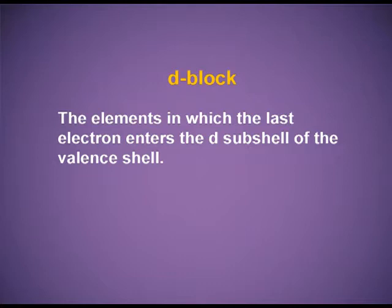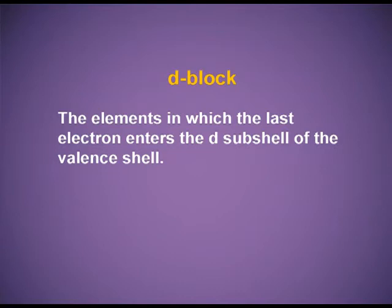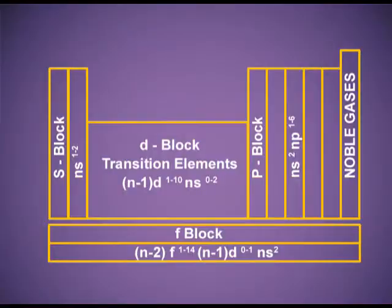For the D block, the elements in which the last electron enters the D subshell are called D block elements. The D block elements are placed between the S and P block and are also known as the transition elements. The S block elements are metals and the P block elements are mainly non-metals; the shift from metallic behavior to non-metallic behavior occurs through the D block elements, which is why they are called transition elements. Their electronic configuration is (n-1)D1 to 10, nS0 to 2. Since the D subshell can accommodate 10 electrons, there are 10 groups in the D block.